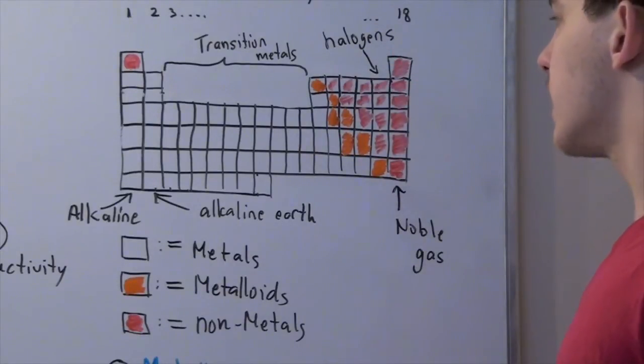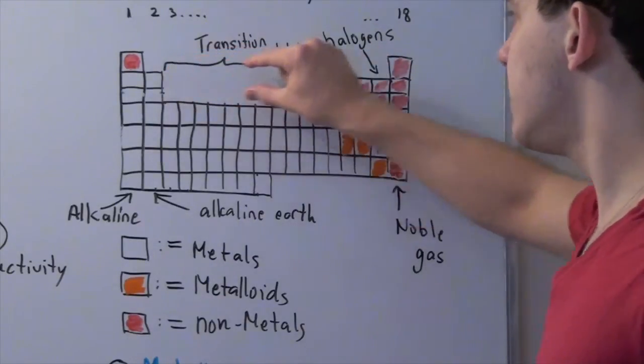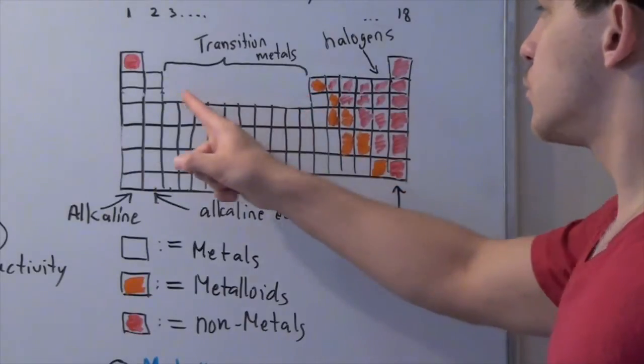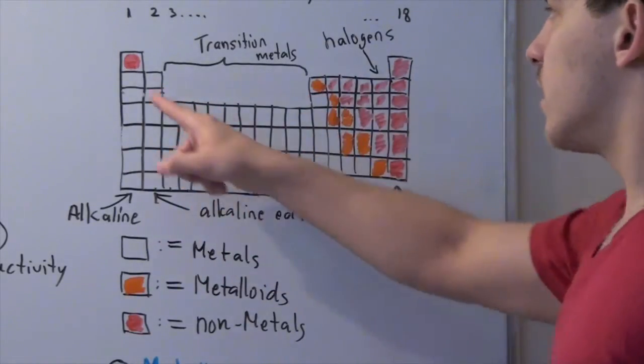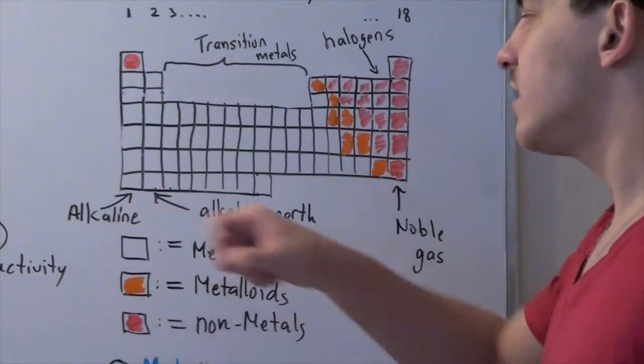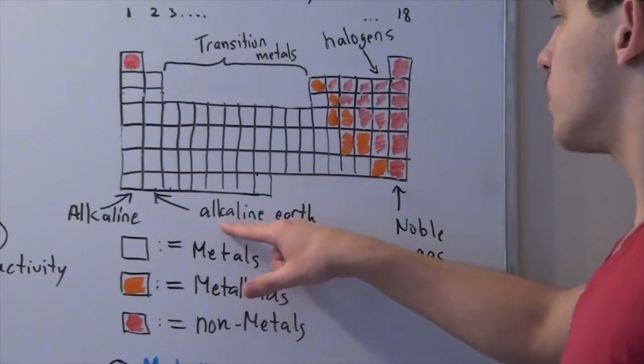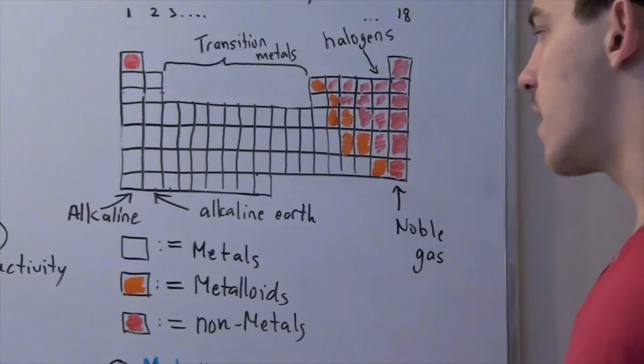Now, this, these guys here, from this group to group number 3, are called transition metals. Group number 1 are known as alkaline metals, and group number 2 are known as alkaline earth metals.